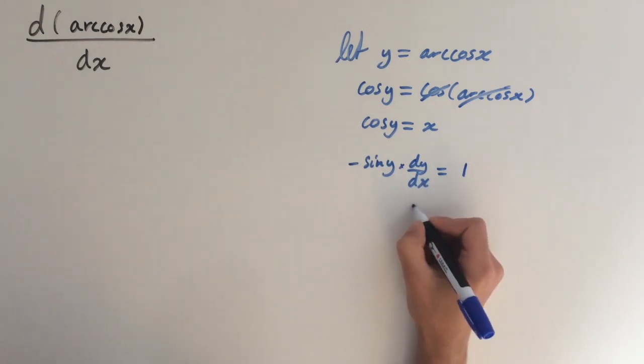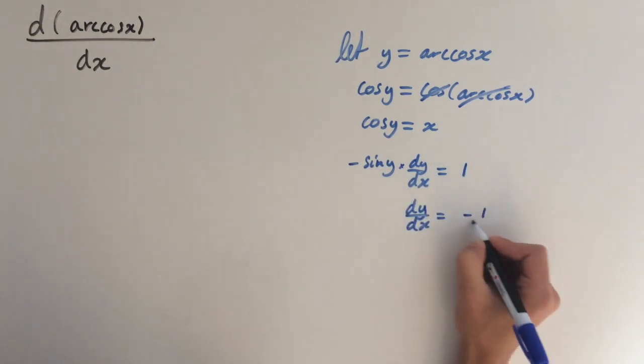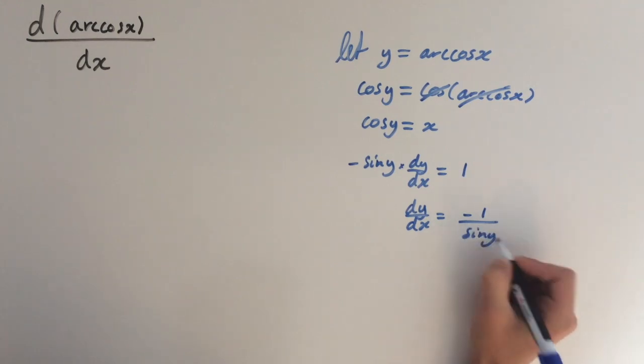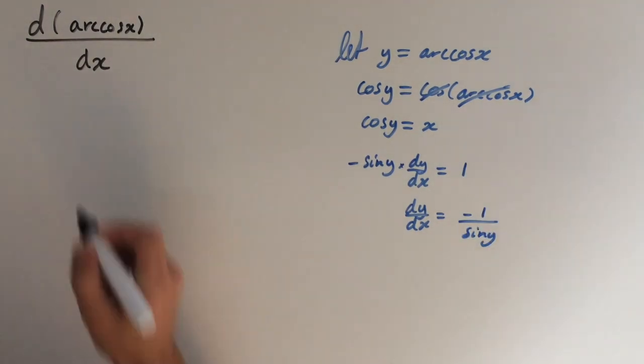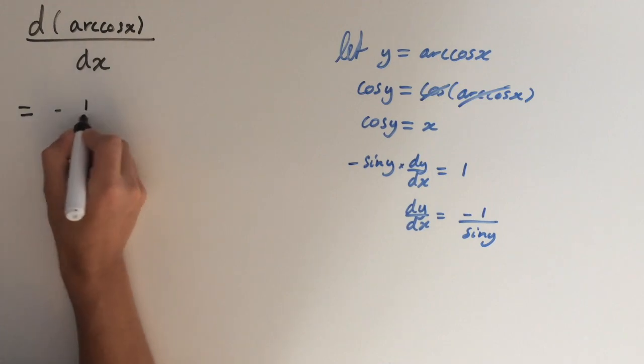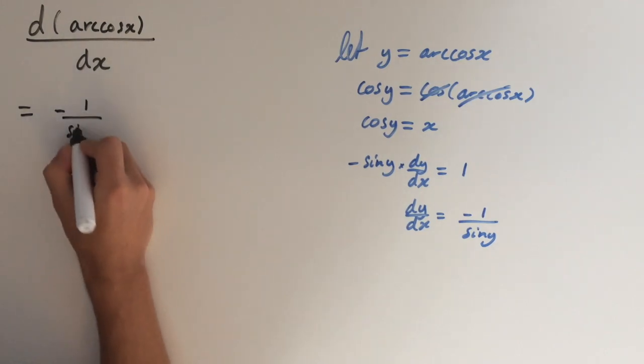So let's rearrange for dy/dx. This equals minus 1 over sine of y. So I'm just going to write it over here. So this equals minus 1 over the sine of y.